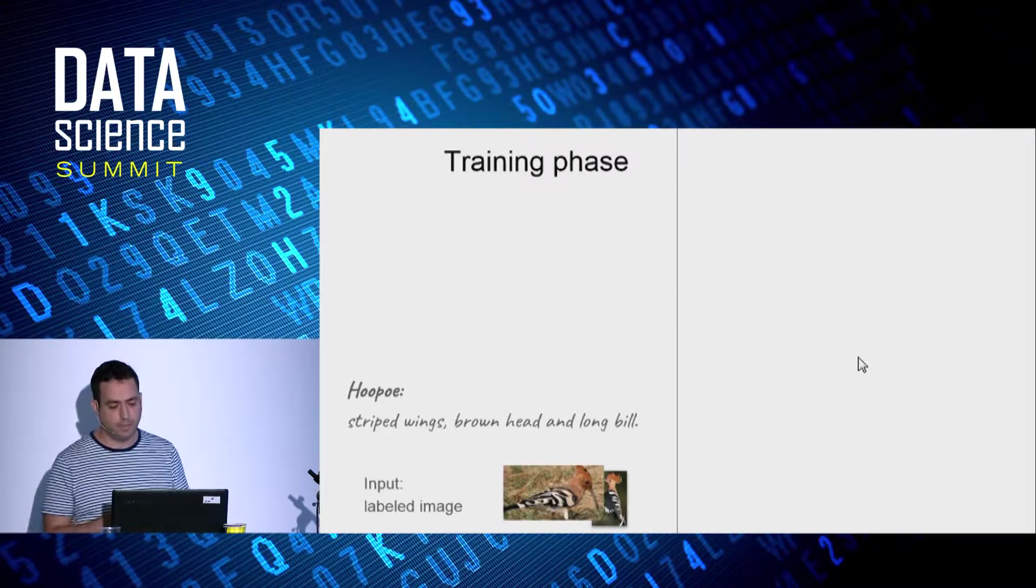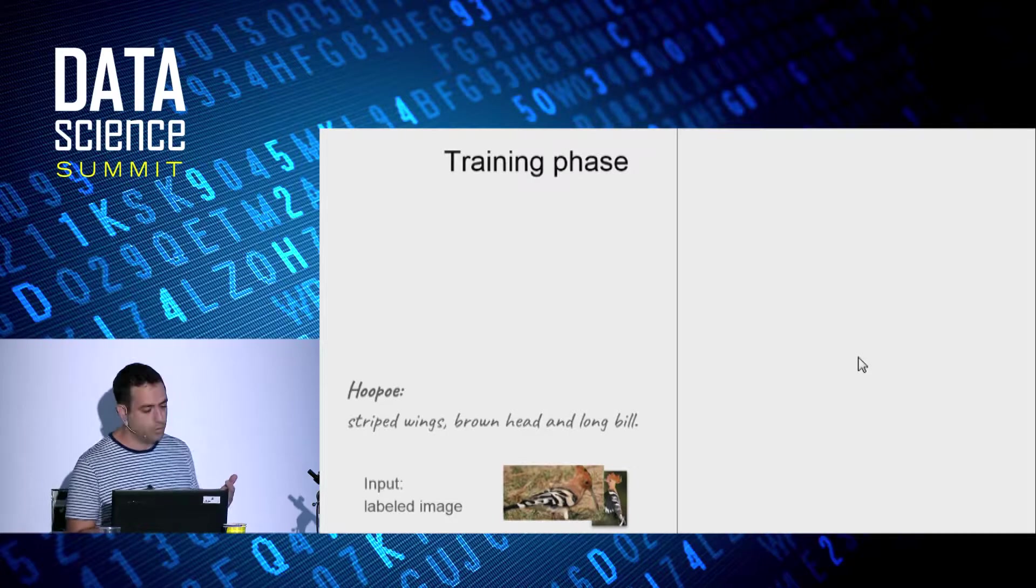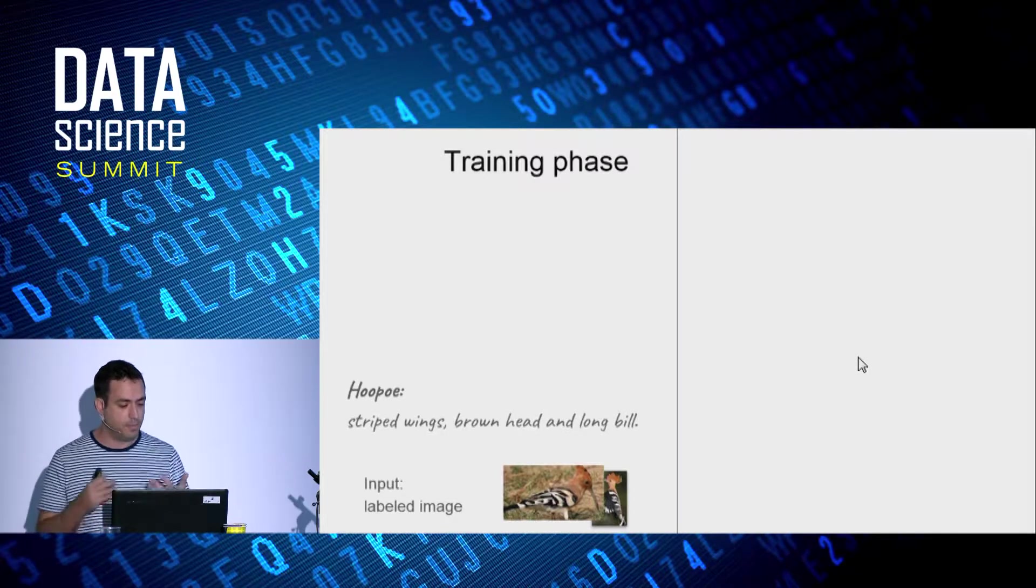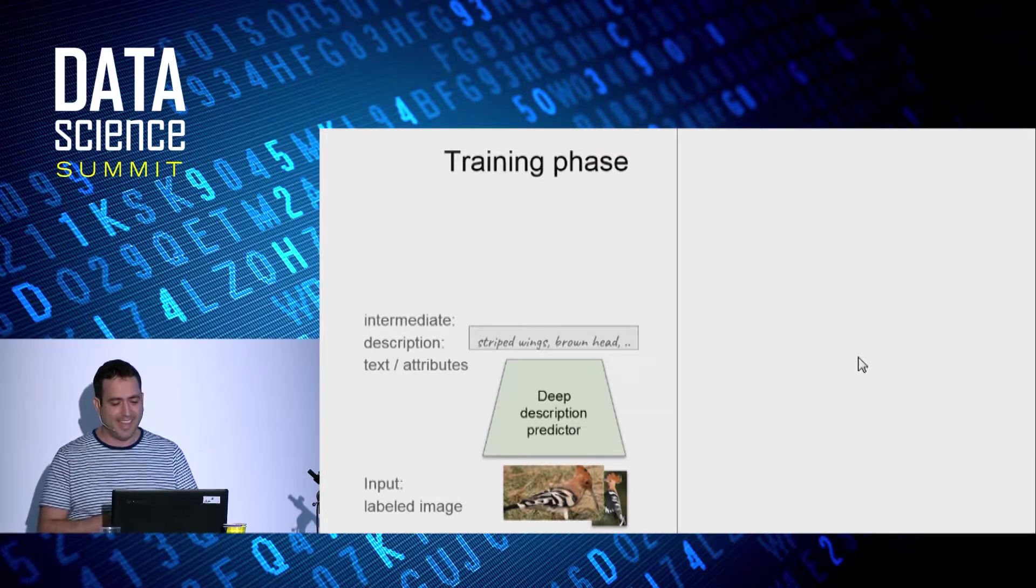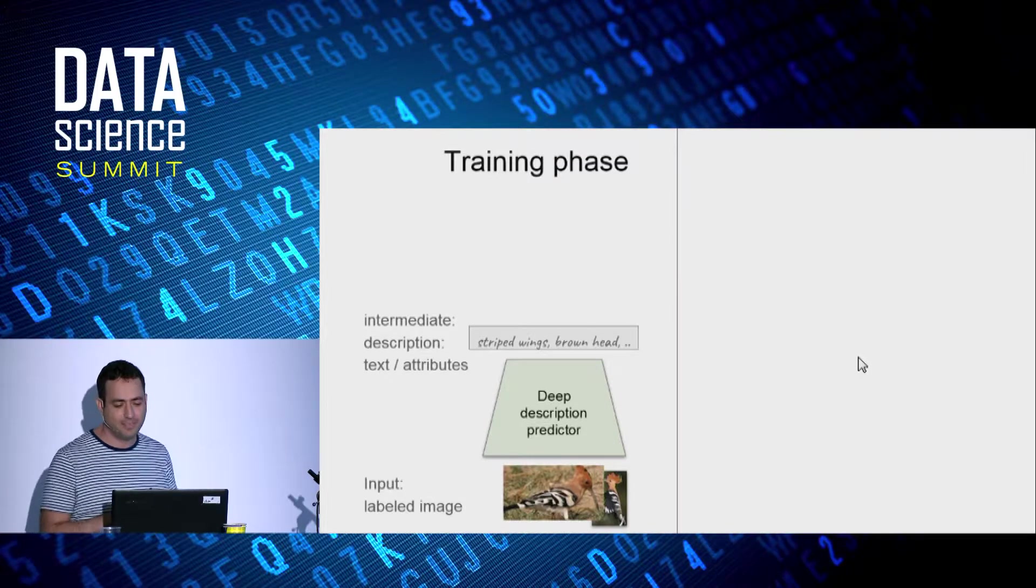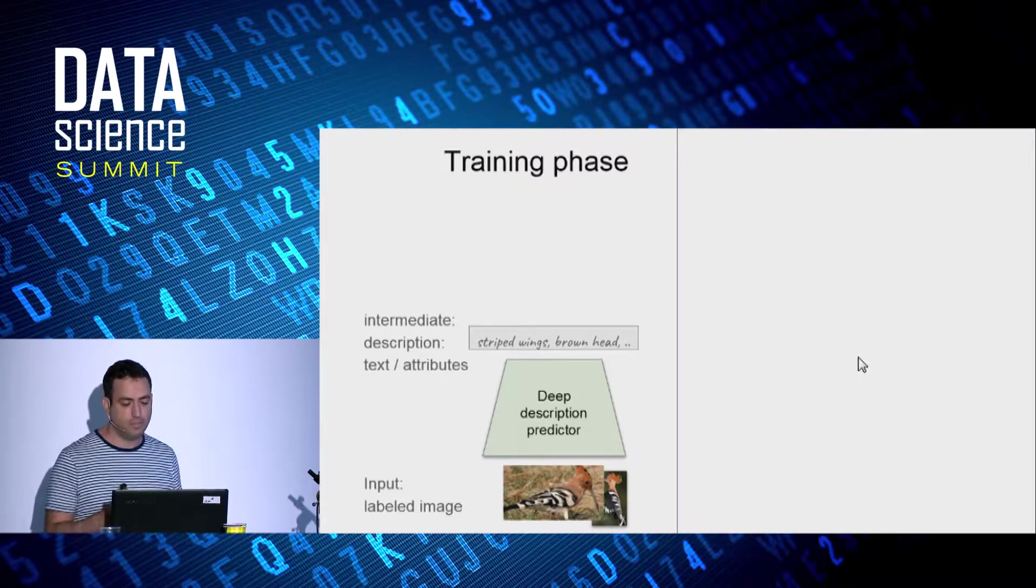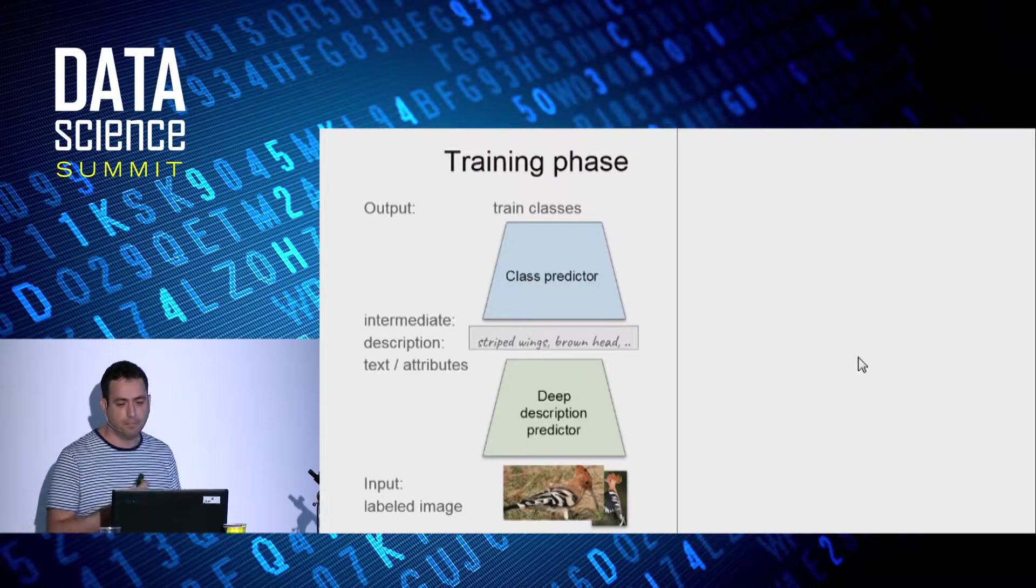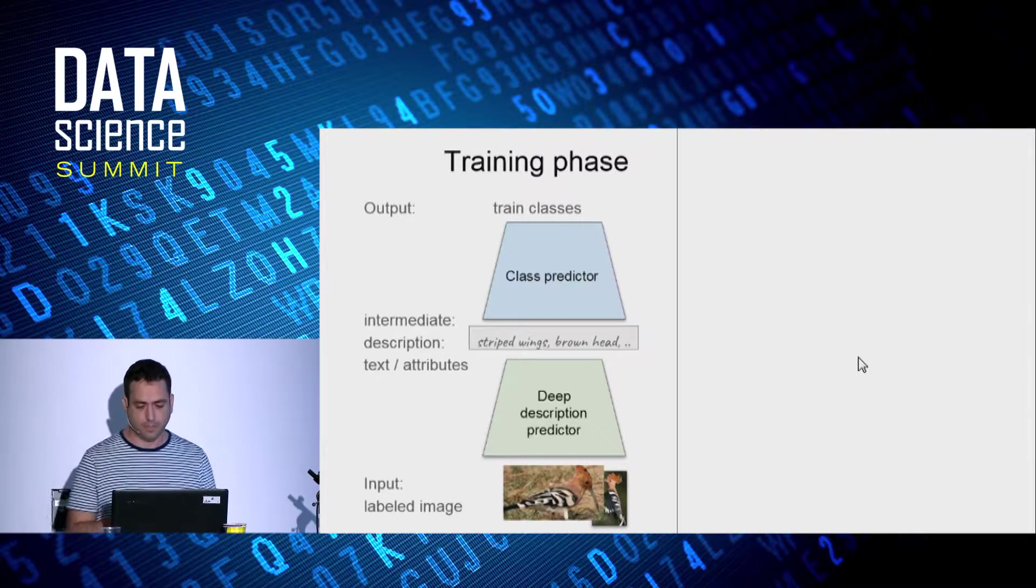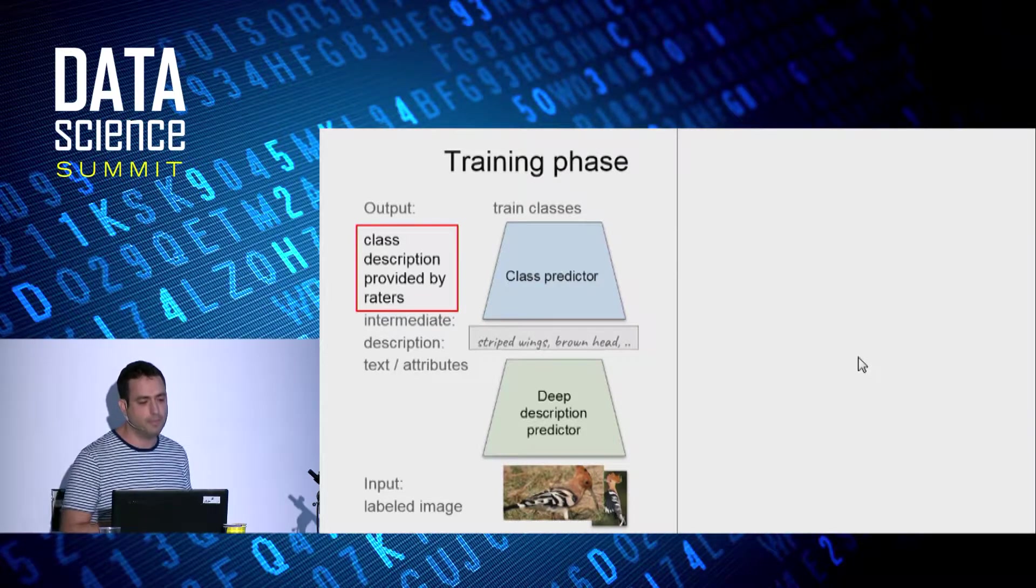So more formally, on the training phase, we have a set of labeled samples, and each class is also accompanied with a semantic description. For example, a hoopoe has striped wing, brown head, and long bill, hoopoe is duchifat for Israelis. And with a semantic description, we can train a deep description prediction model. We use it as an intermediate representation that decomposes an image into its basic semantic building blocks. And the top part maps the predicted description to a class prediction. For that, it uses this class description provided by the raters.